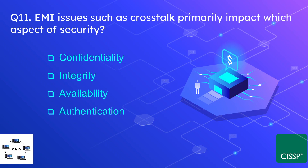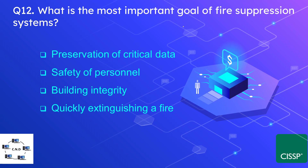Question number eleven: EMI issues such as crosstalk primarily impact which aspect of security? The options are confidentiality, integrity, availability, and authentication. The correct answer is integrity. Electromagnetic interference can deteriorate call quality, making it hard to understand conversation, and may mingle your call with someone else's — meaning the integrity of the communication is impacted.